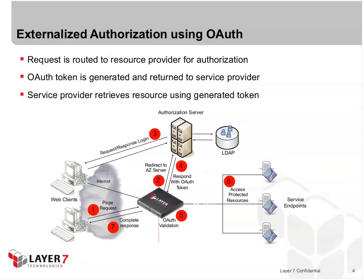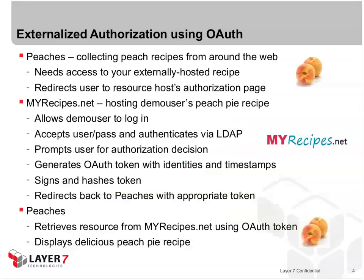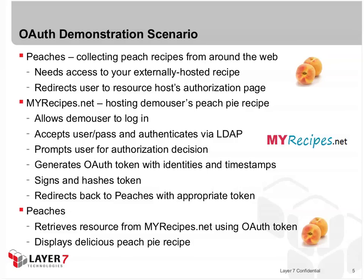For our demonstration, we'll be dealing with a scenario that fits the specification exactly. We're connecting to a web application called Peaches. Peaches collects peach recipes from around the web and wants access to your externally hosted recipe. When you go to Peaches, it redirects the user to the resource host's authorization page. That host is myrecipes.net — it has all of your peach pie recipes. It allows the user to log in, accepts a username and password, and authenticates that user via LDAP. It prompts the user for an authorization decision: should Peaches have access to this resource? If so, it generates an OAuth token with identities and timestamps, signs and hashes the token, and redirects the user back to Peaches with the appropriate token. Peaches then goes to the resource along with that OAuth token and retrieves your peach pie recipe.